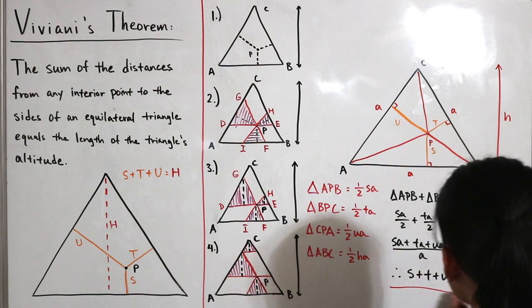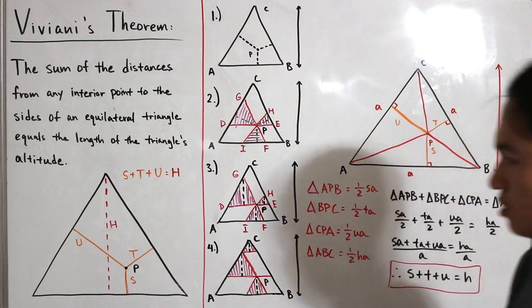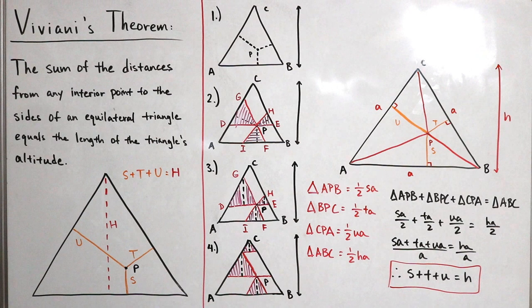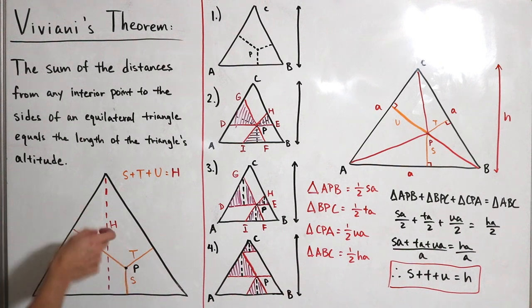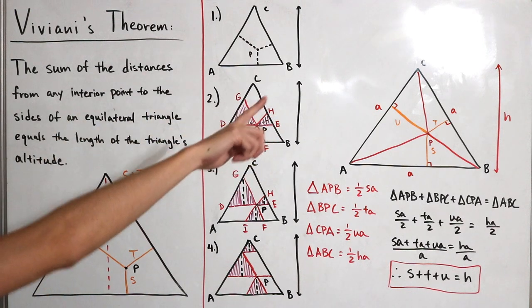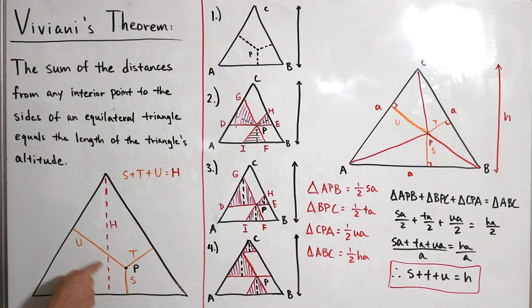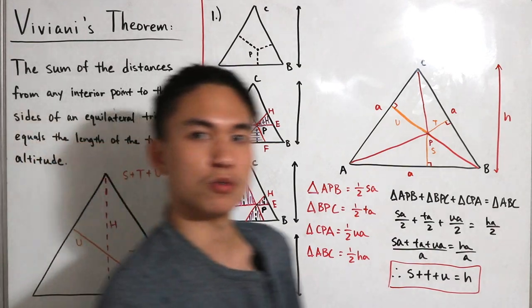So there we have it — the theorem proven both visually and algebraically. I really like this theorem. Even though I'm not generally a geometry person, it's a cool result: for any interior point of an equilateral triangle — and it must be equilateral — the distances from that point to the three sides always sum to the triangle's altitude. Pretty cool.